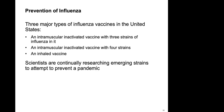There are three major types of influenza vaccines in the United States: an intramuscular inactivated vaccine with three influenza strains, an intramuscular inactivated vaccine with four strains, and an inhaled vaccine. Scientists continually research emerging strains to help prevent pandemics.